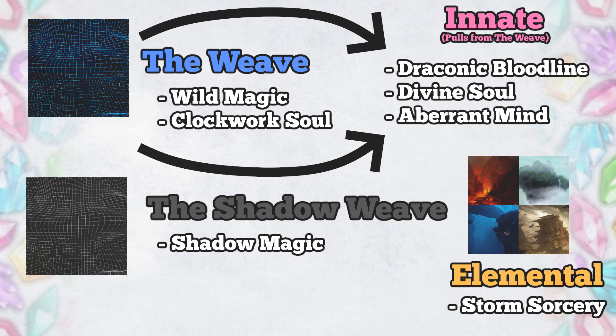Small recap: there's the weave, a source of raw magic that most users tap into to cast their spells. The wild magic and clockwork sorcerers have direct integration into the weave, making them like black holes or gravity points on this grid of magic. There's also the shadow weave, which is where shadow sorcerers pull from — they could be like wild magic or clockwork sorcerers, or maybe just have some innate ability to pull from the source due to an event. The elemental planes are separate motes of elemental energy — the storm sorcerer pulls from the elemental plane of air. The draconic bloodline, aberrant mind, and divine soul each have innate power from some sort of gift or ancestry that allows them to naturally manipulate the weave rather than be directly tapped in.